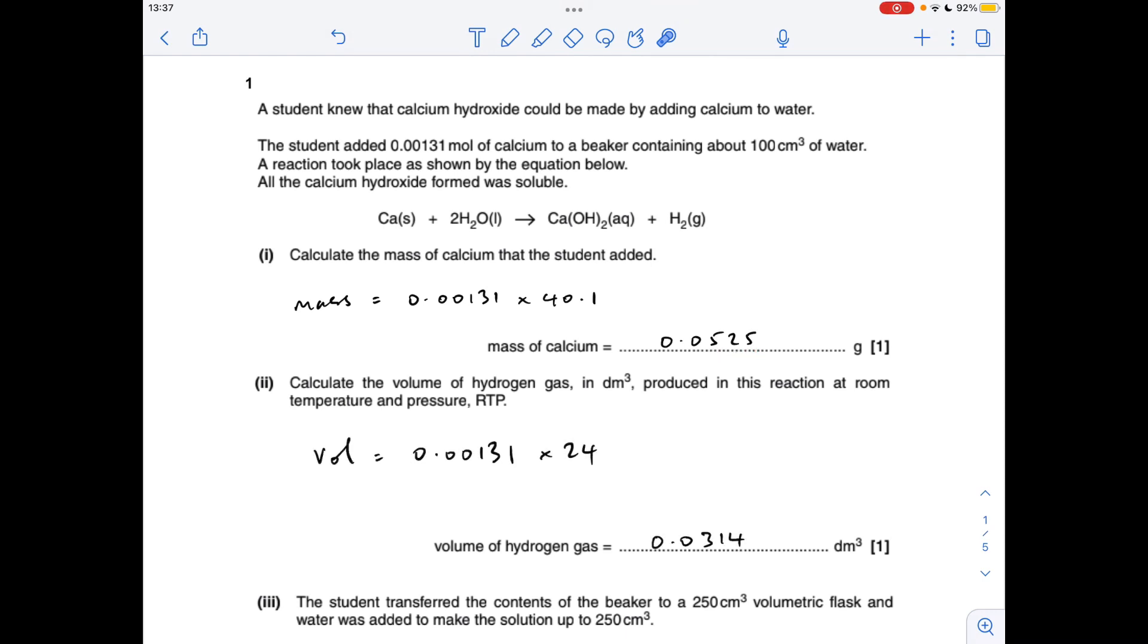Volume of hydrogen made at RTP is the moles of hydrogen, which is going to be the same as the moles of calcium from the ratio in the equation, multiplied by the molar gas volume 24, gives us that many decimeters cubed.